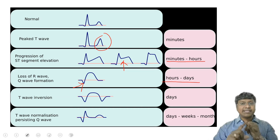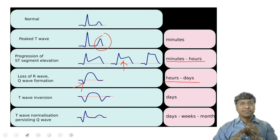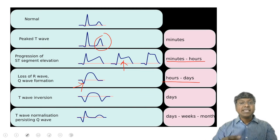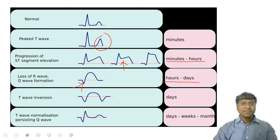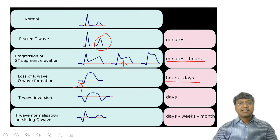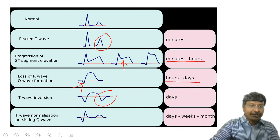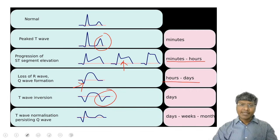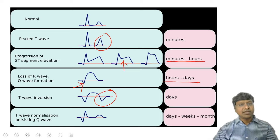Now, once there is development of your Q wave, that we call it as evolved MI. And as the days progress, there will be presence of the Q wave and the T wave will be inverted. The T wave can be inverted even within hours also.